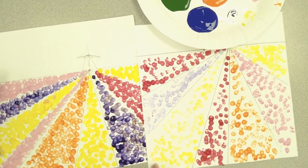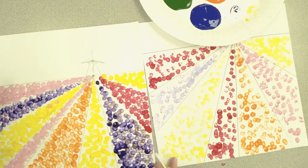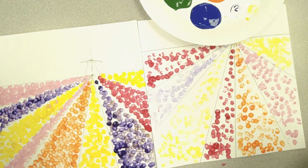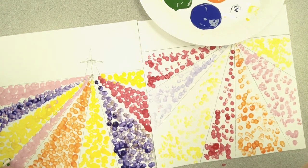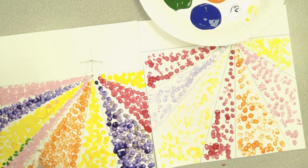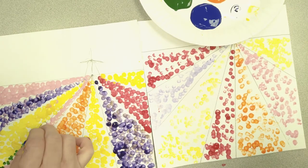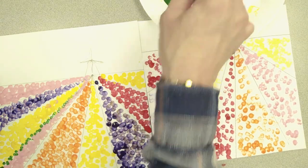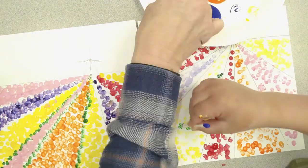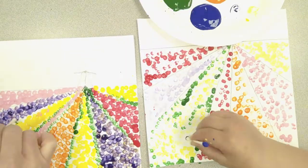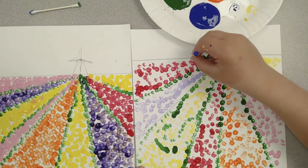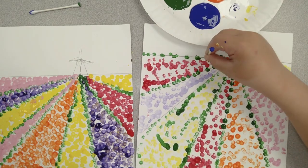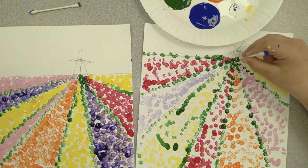We're done with our fields, and now what we have to do is add a little bit of green for the stems of the tulips. So I'm going to get green on a clean Q-tip, and along those lines that we made originally, I'm just going to put a little bit of green in between the lines for the tulip fields. You want to make sure that when you do the green, it's really just along those lines that we made before.